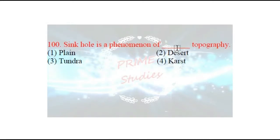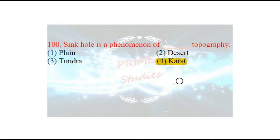Next question: sinkhole is a phenomenon of which topography? Jo sinkhole hoti hai, woh kaisi sthalakruti ka praman hai? The options are: plane, desert, tundra, or karst. When below the earth's surface there are mostly carbonate rocks, groundwater dissolves them and caves are formed. When pressure comes from above, those caves collapse and a pit is formed — jise hum sinkhole kehte hain. If the size of the sinkhole is very large, then we call it a doline.